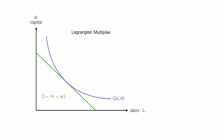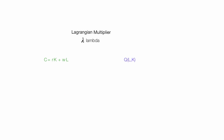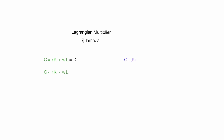To do this, there's this thing called the Lagrangian multiplier, signified by lambda. I have a given quantity I want to produce, and I'm constrained by cost. So I have two equations — the green one and the blue one — and the green one is my constraint equation. I'll set the constraint equal to zero, which is typically written as cost minus the rate of capital times capital minus the wage rate times the amount of labor used equals zero.